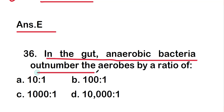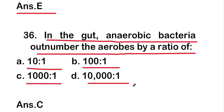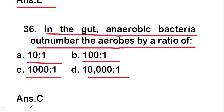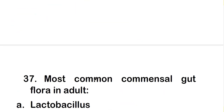Next question: in the gut, anaerobic bacteria outnumber the aerobes by a ratio of 10:1, 100:1, 1000:1, or 10,000:1. The right answer is option C — 1000:1. In the gut, anaerobic bacteria outnumber aerobes by a ratio of 1000 to 1.